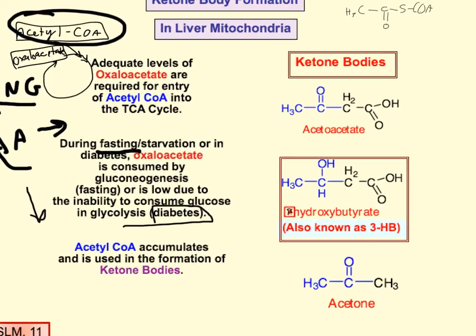If you think of ketone bodies as four-carbon molecules that carry the acetyl group, you'll remember that CoA is a pretty large molecule. So you don't want to pump out a whole bunch of acetyl-CoA into the serum. To mobilize the acetyl groups into the blood for use by other tissues, you make them a four-carbon chain — these are ketone bodies, four-carbon carriers of two-carbon acetyl groups.